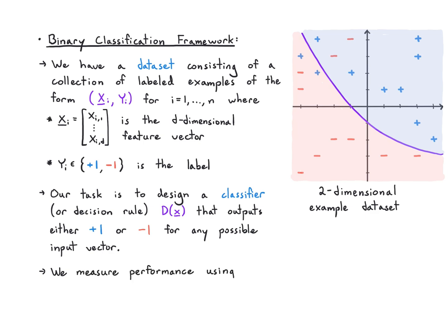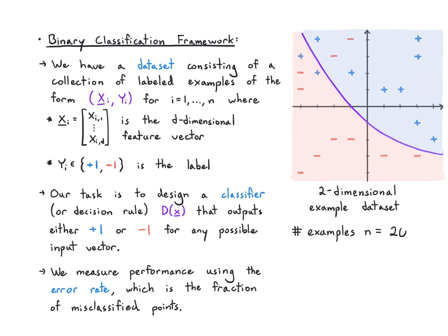We're going to measure performance using the error rate, which we can relate to probability of error by thinking of it as the fraction of misclassified points. In this case we have 20 examples and we can see that four of them have been misclassified, so the error rate is 4 out of 20, which is 20%.